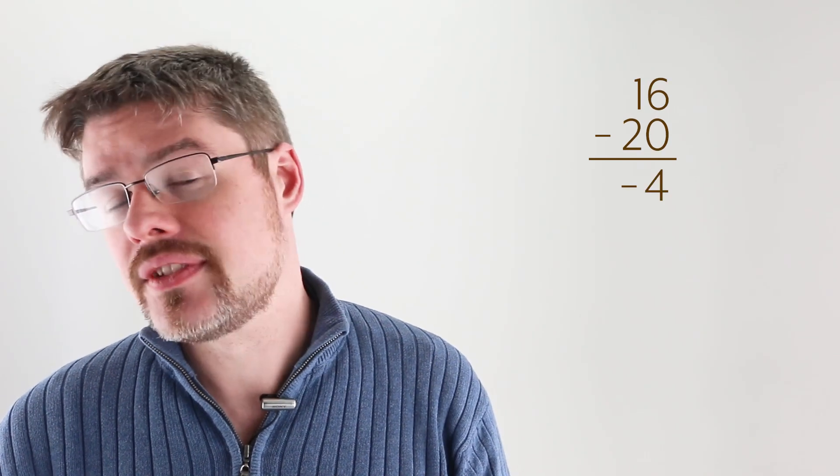To subtract a larger number from a smaller number, simply flip them, subtract normally, and then add a negative sign to your final answer.